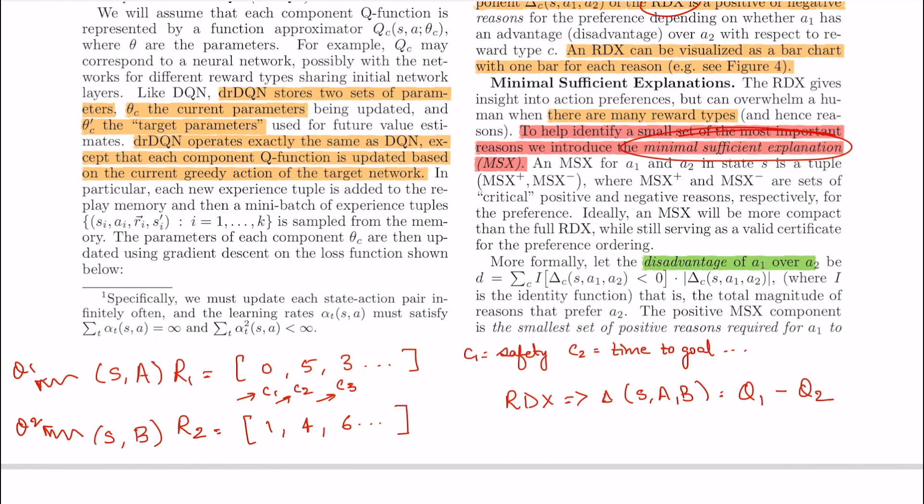Now suppose the reward is not a single real number but rather a vector of real numbers where each index is a reward type. So here R1 and R2 are two types of rewards. When in state S I took the action A I get reward R1 which is in fact a vector where each index, let's say here zero, is the reward that was sourced from this reward type C1 which can be safety. Similarly, there is this reward R2 which was given when in state S I took action B and instead of zero here I'm getting one for the reward type C1.